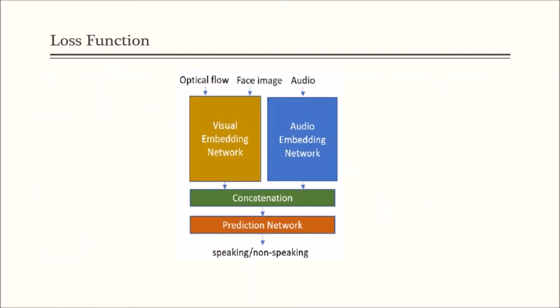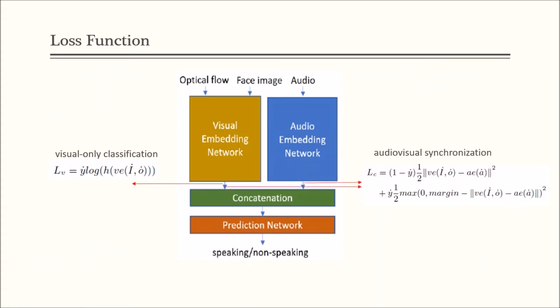To train the model, we use multi-task learning to improve the learning efficiency of each network. The loss function is designed from three aspects. First, minimize the visual-based classification error. Second, learn audio-visual synchronization. Third, minimize the classification error after audio-visual fusion. The final loss function is a weighted sum of these three loss functions.